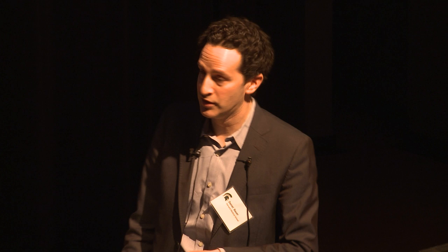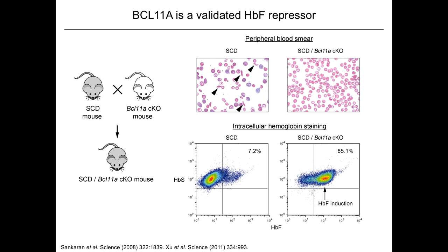In one study, a mouse model of sickle cell disease was crossed to a mouse with conditional knockout of BCL11A in the erythroid lineage to create a double knockout. In this double knockout there was a disappearance of the characteristic sickle cell forms, a pan-cellular induction of fetal hemoglobin, and reversal of both the hematologic and pathologic manifestations of disease. BCL11A is a zinc finger transcriptional repressor that occupies the beta-globin cluster and participates in complexes with other chromatin-modifying and DNA-binding factors.